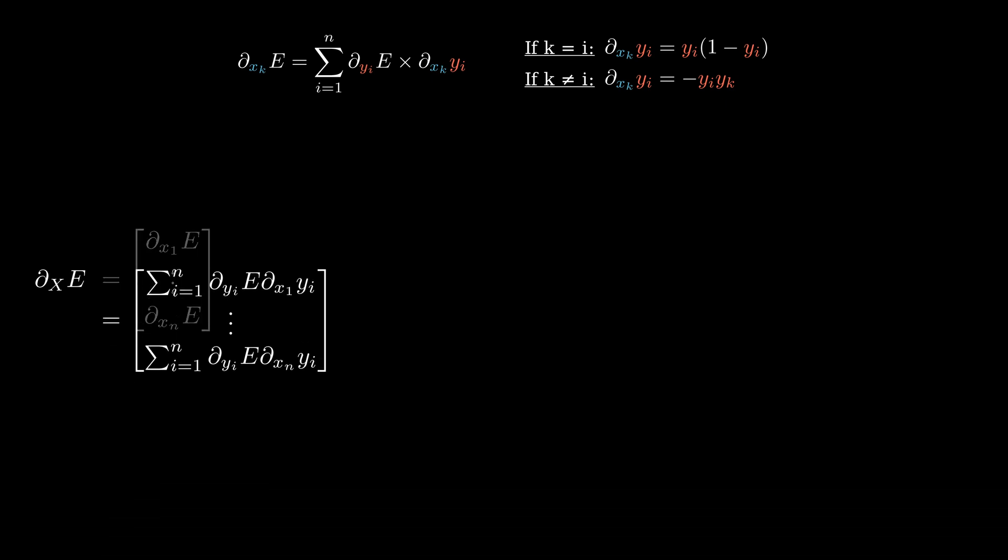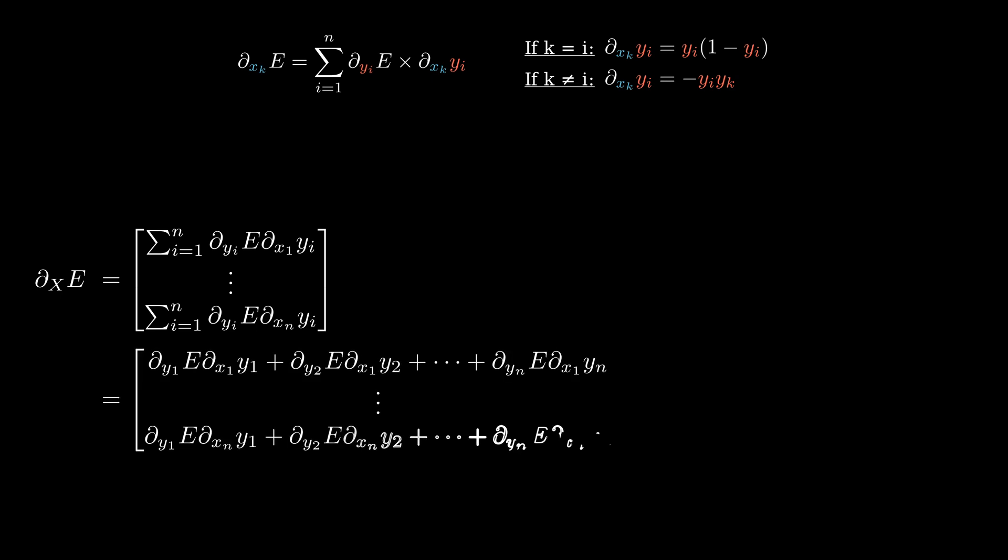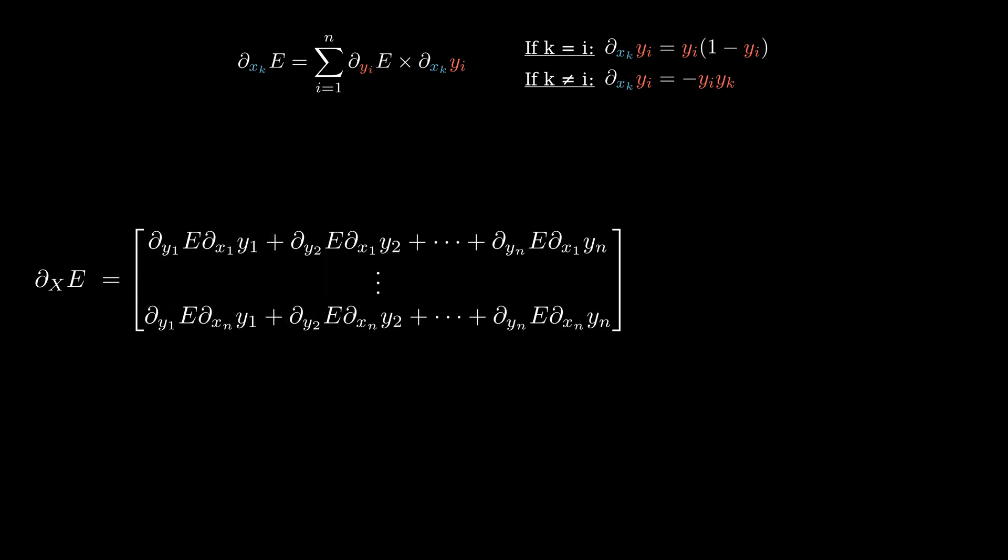However, having the sum written this way, we cannot easily include the condition on the index. Therefore, we will explicitly write the sum. Okay, now notice that we can already separate this matrix using a dot product. Can you see it?